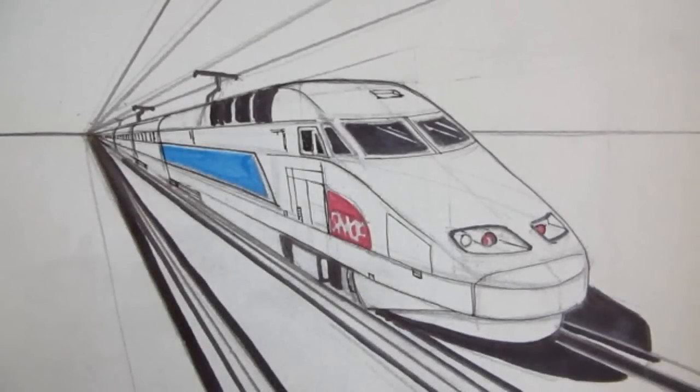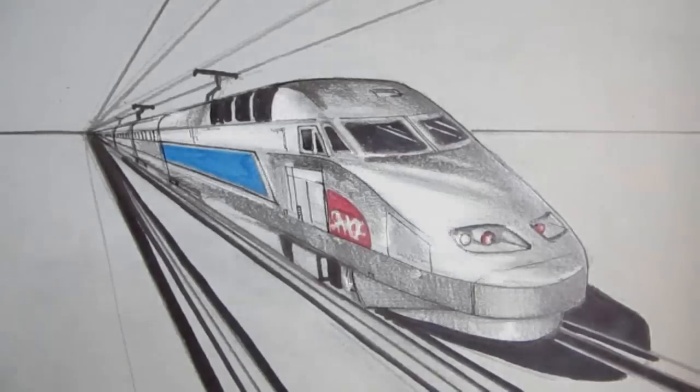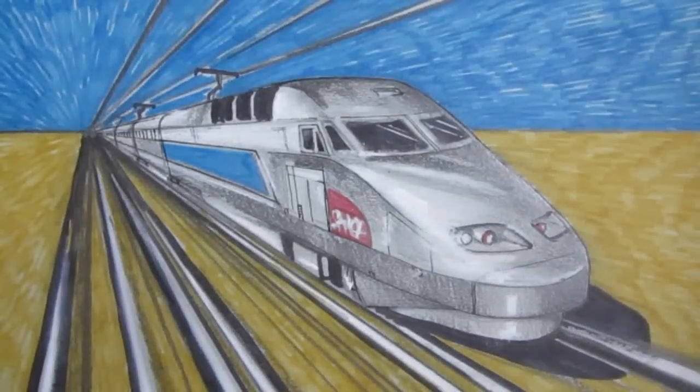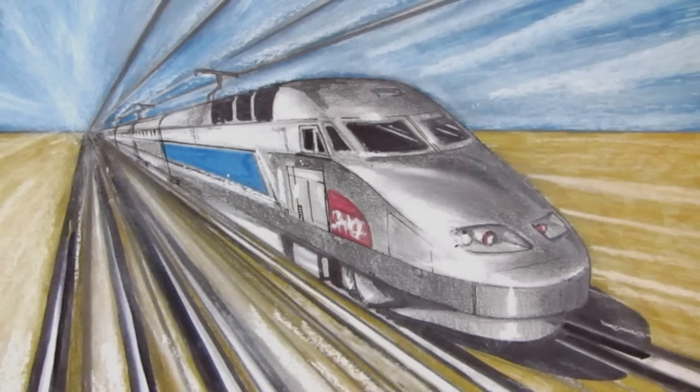To finish this drawing, I add some graded mid-tone using my 4B pencil. I add some white pastel for a few highlights so that the train looks metallic. I add color to the ground and also color to the sky, and then to finish I add some more white pastel to make the background lighter and to add a sense of movement to the overall picture.